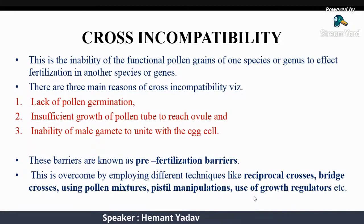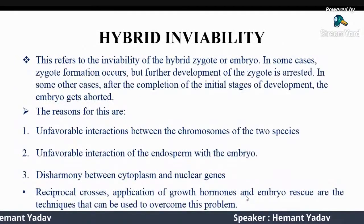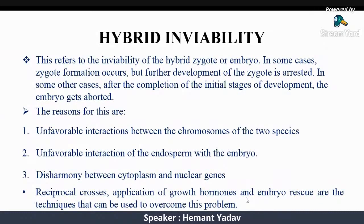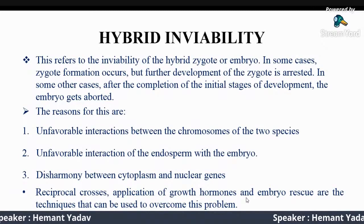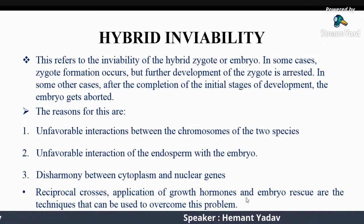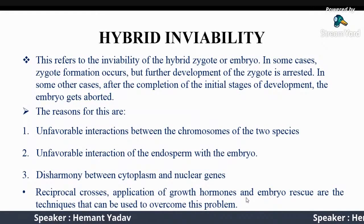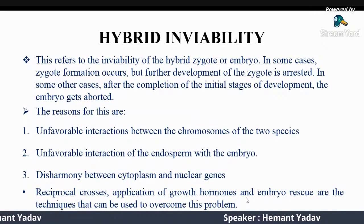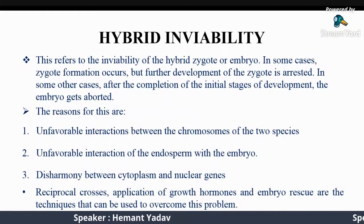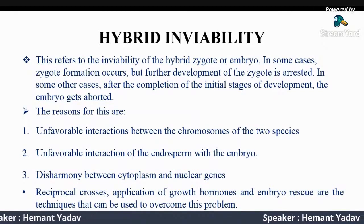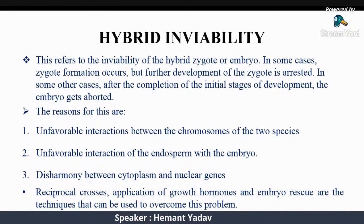Hybrid inviability refers to the inability of the hybrid zygote or embryo to survive. In some cases, zygote formation occurs but further development is arrested; in other cases, after initial stages of development, the embryo aborts. The reasons include unfavorable interaction between chromosomes of the two species, unfavorable interaction of the endosperm with the embryo, and disharmony between cytoplasm and nucleus. Reciprocal crosses, application of growth hormones, and embryo rescue are techniques that can be used to overcome this problem.